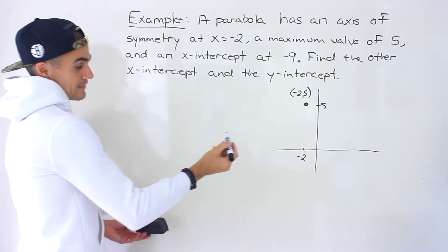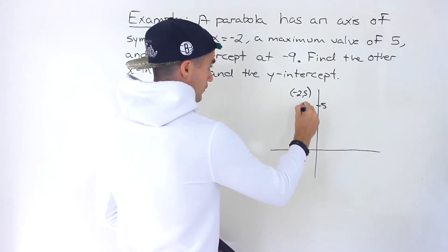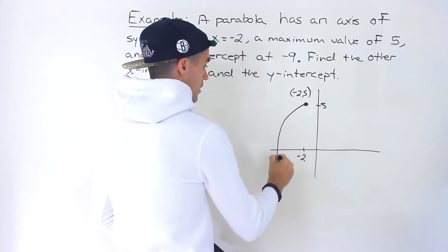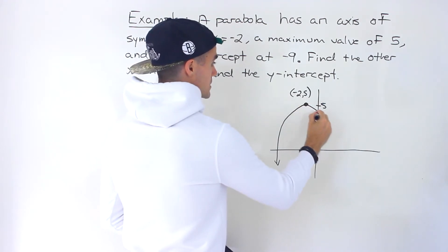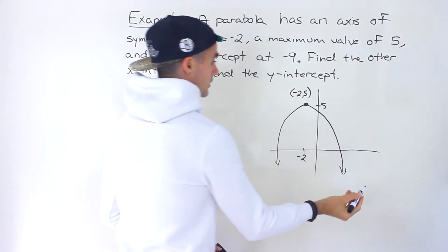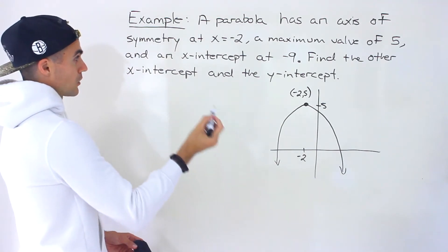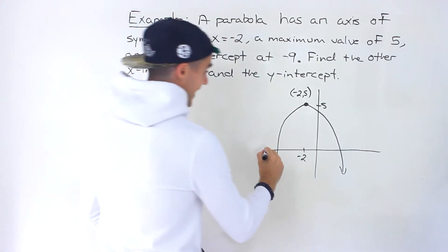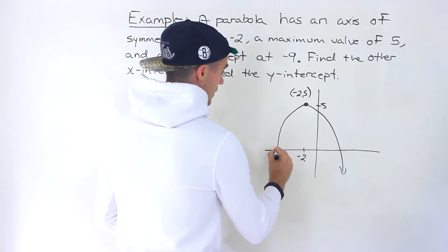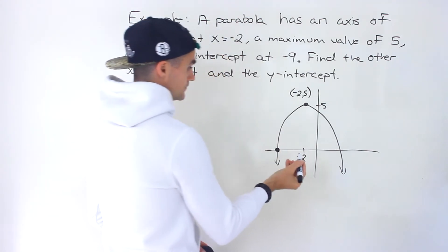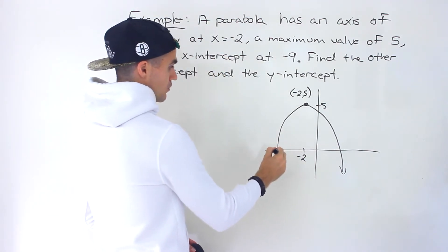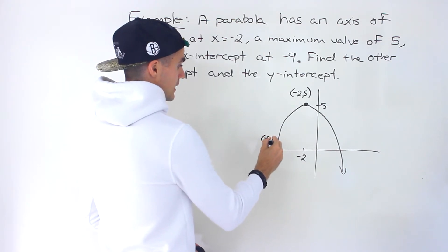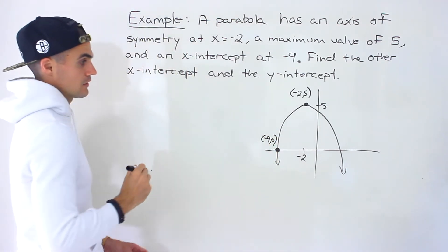We know the parabola is going to open down from here. So if we draw a parabola that opens down, it's going to look something like that. We're also told there's an x-intercept at negative 9, which would be right over here. So this point is going to be negative 9 and 0.